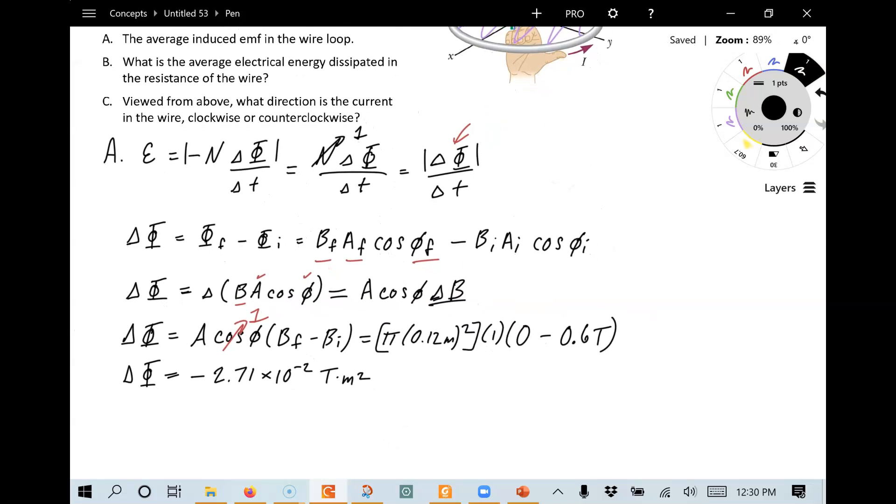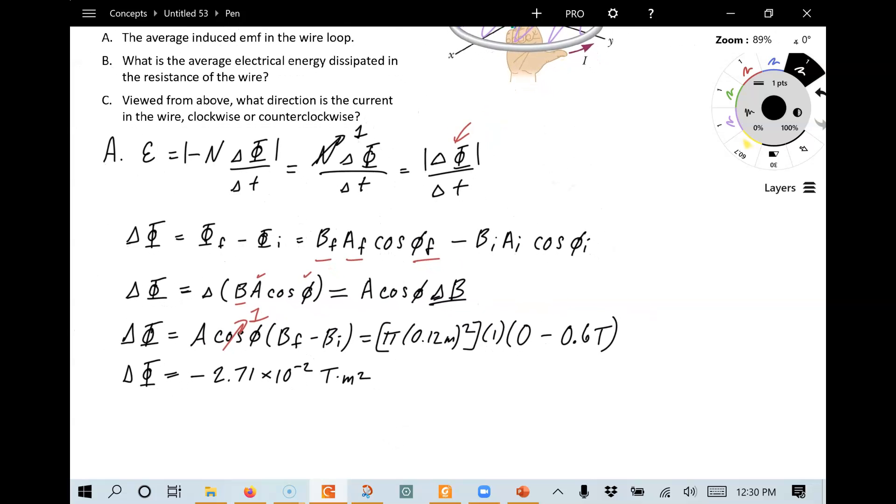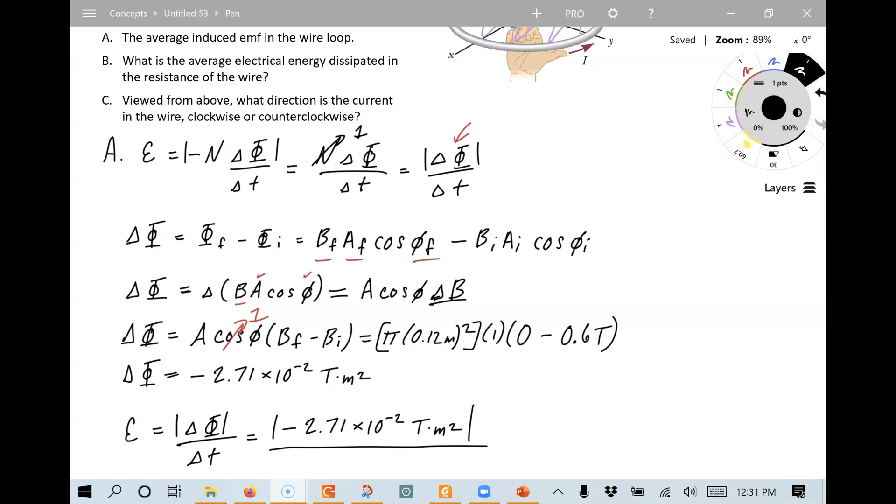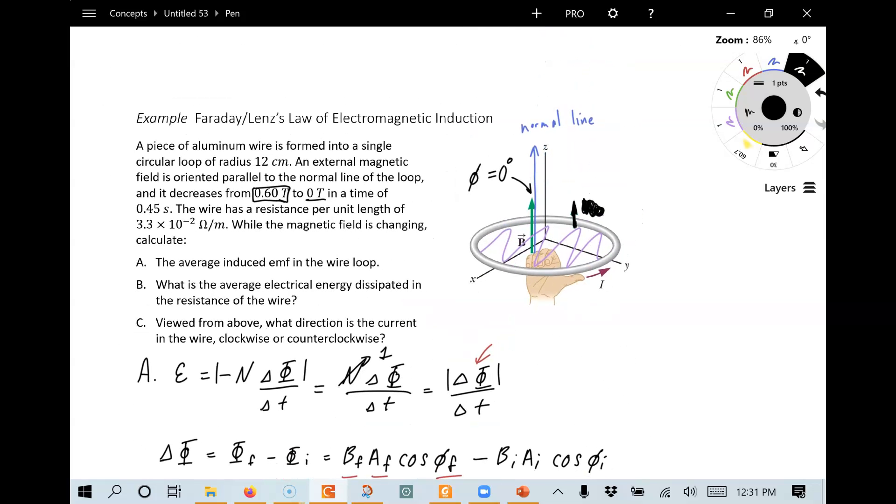And now all we need to do to complete part A is to put that value into the top equation for Faraday's law. So the magnitude of the induced EMF, average induced EMF, it's the change in magnetic flux divided by the elapsed time interval. And we just calculated the change in magnetic flux, this number. And the elapsed time interval, while this was changing from 0.6 tesla to 0 tesla, is 0.45 seconds.